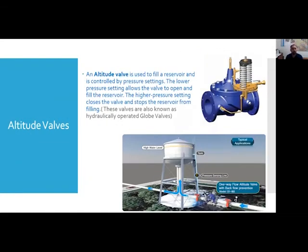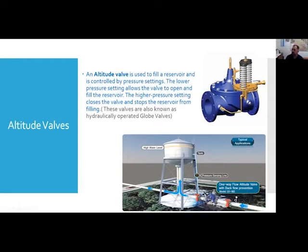An altitude valve is used to fill a reservoir and is controlled by pressure settings. The lower pressure setting allows the valve to open and fill the reservoir; the high pressure setting closes the valve and stops filling. For example, your lower set point might be the footage where you want filling to start, and the higher set point the footage where you want it to stop. You can set this through the pilot assembly with springs, and the valve will operate automatically on those set points.